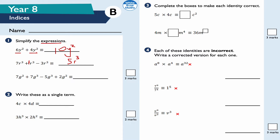Next: 7g squared plus 7g cubed minus 5g cubed plus 2g squared. Combining all the g squared terms: 7g squared plus 2g squared is 9g squared. And 7g cubed subtract 5g cubed is 2g cubed. So the answer is 2g cubed plus 9g squared — either order is fine for an exam-style answer.